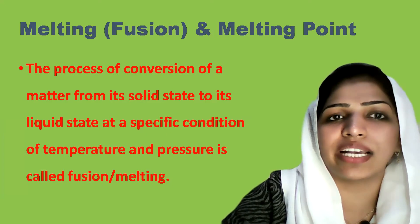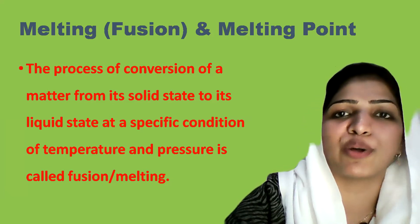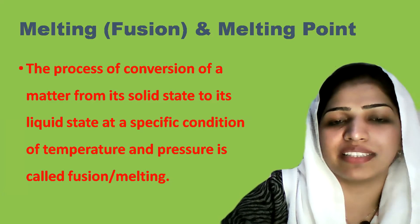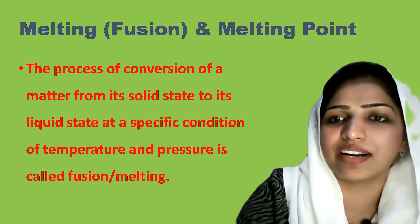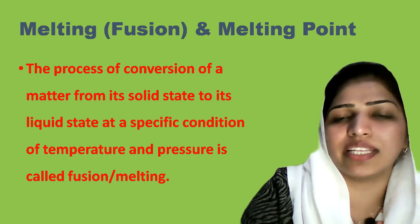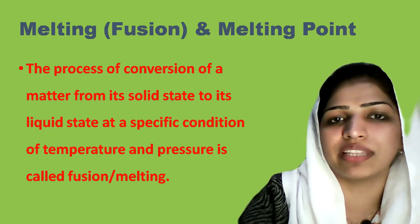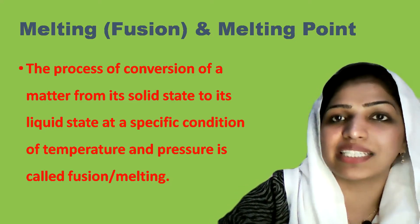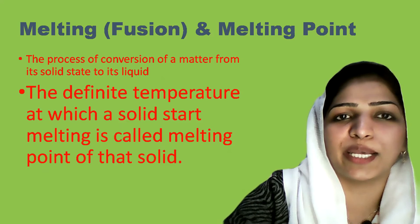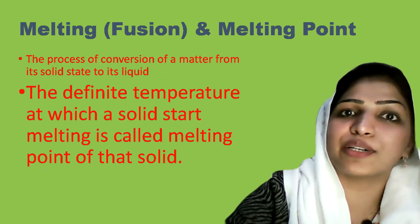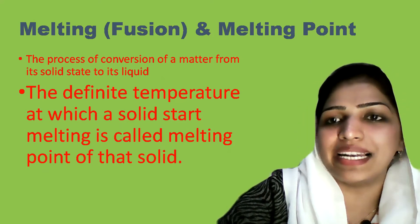For example, if we take ice at minus 10 degrees Celsius, there is ice. At zero degrees we still have ice, but when we continue adding heat, at a definite temperature the ice starts melting and becomes water. This definite temperature is called the melting point. For ice, the melting point is zero degrees Celsius.